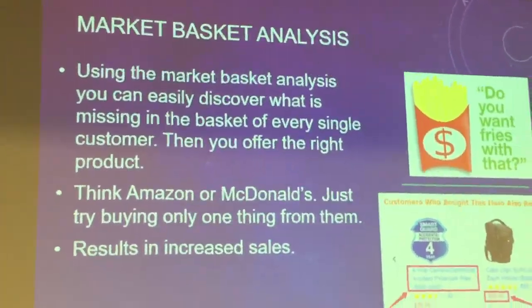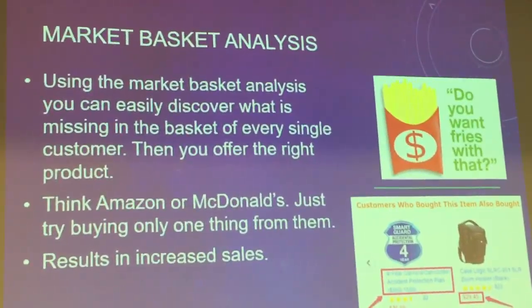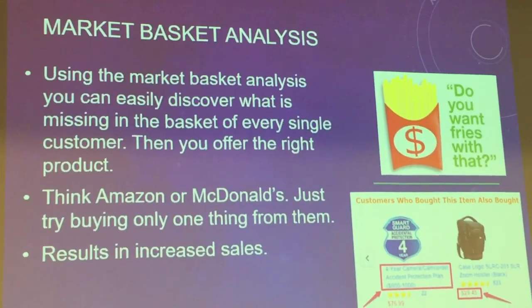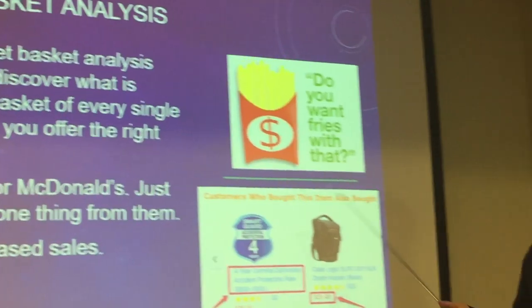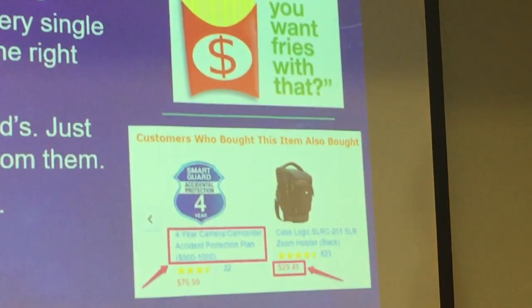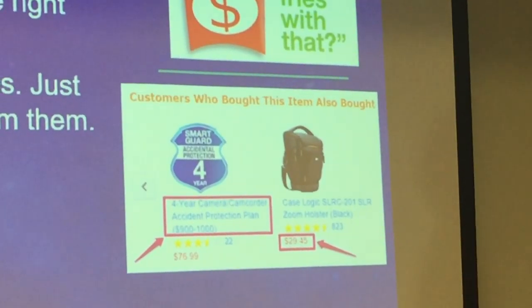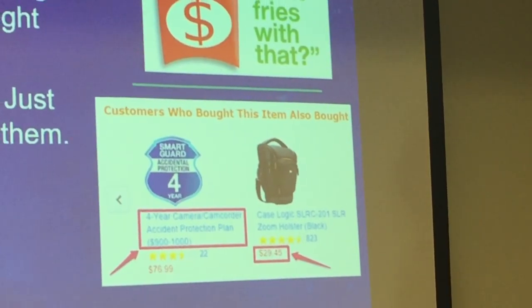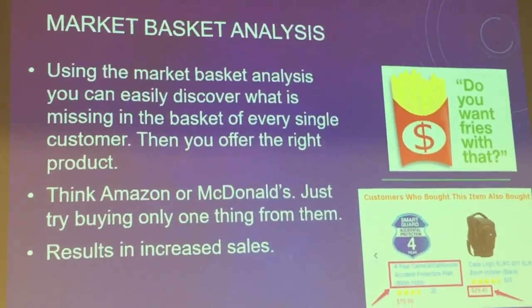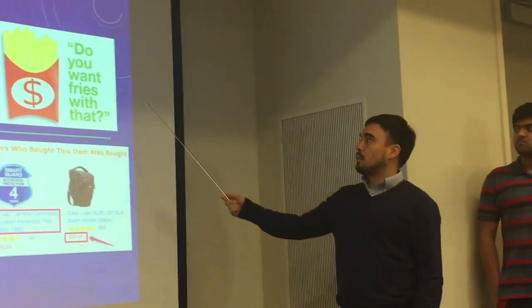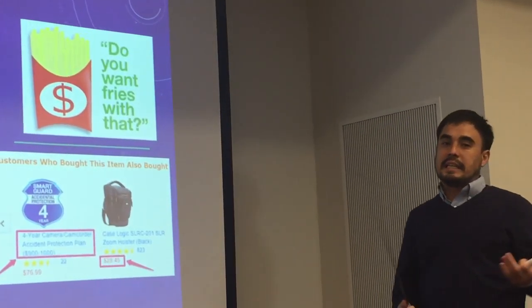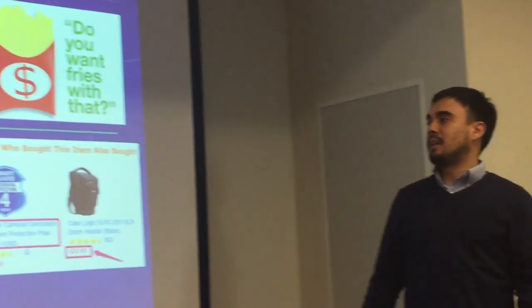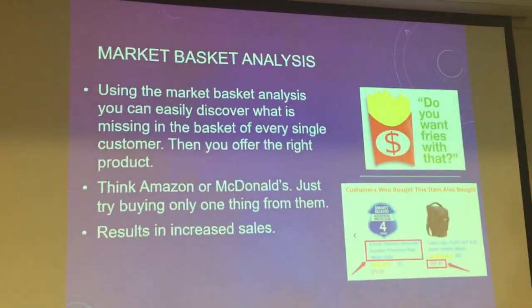Market basket analysis is something you can do to easily discover what is missing in the basket of every single customer, so you can offer the right basket. Two examples are Amazon and McDonald's. If you try to buy one thing from them, they'll try to suggest a sale — they know what goes together. One common example is 'Do you want fries with that?' — an easy upsell. Those are different ways that market basket analysis helps you figure out what kinds of things go together.